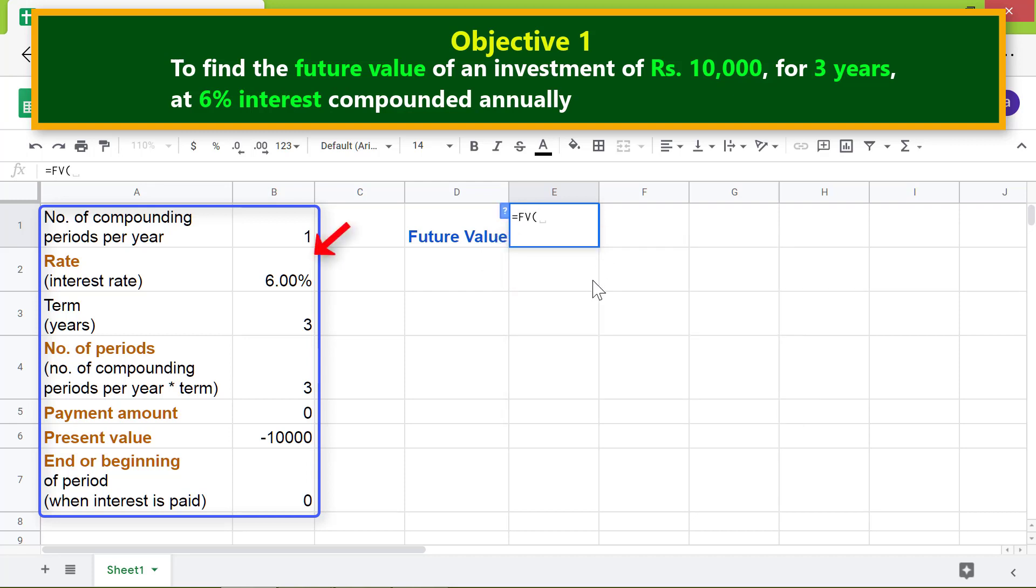For the rate, click this cell. We have to convert the interest rate to interest rate per compounding period, so type the division operator and click this cell. Type comma. For the number of periods, click this cell. Type comma. For the payment amount, click this cell. Type comma. For the present value, click this cell. Type comma.